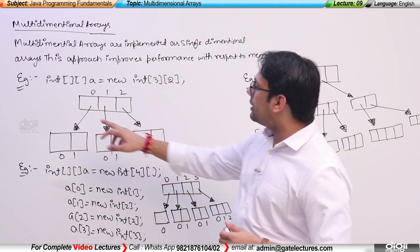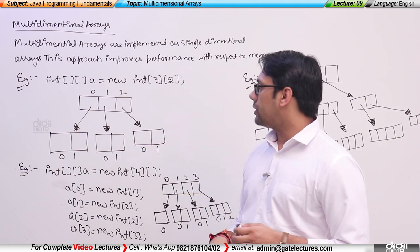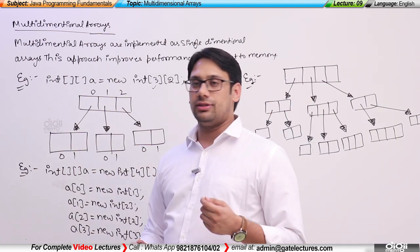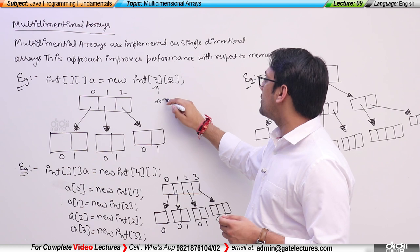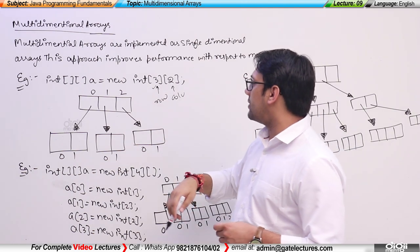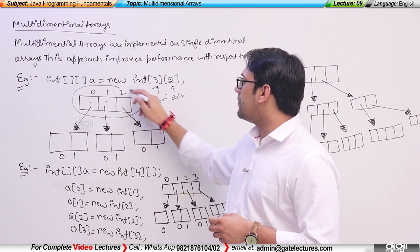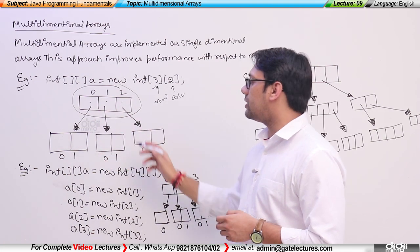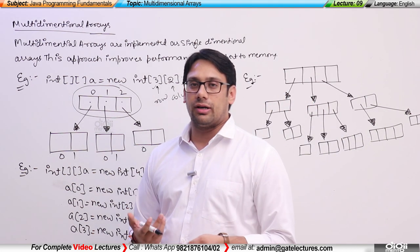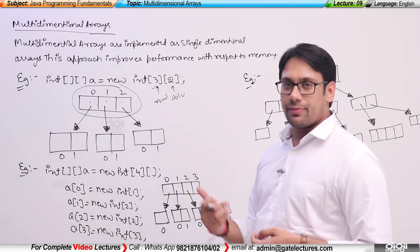Here, as you can see, if I declare integer double brackets — `a = new int[3][2]` — here 3 is the number of rows and 2 is the number of columns. But how the memory will be allocated will be like this: we will be having a single dimensional array, and for that single dimensional array we will be having three more single dimensional arrays. This leads to better memory utilization in Java.